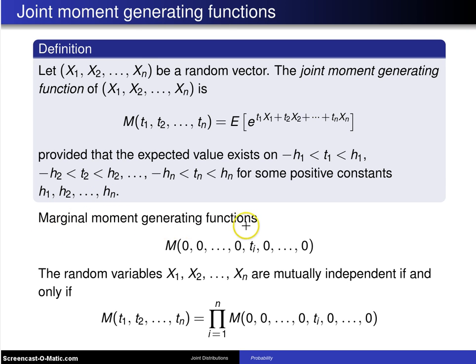If you want to find a marginal moment generating function for X sub i alone, that is M of zeros everywhere except in the ith position.